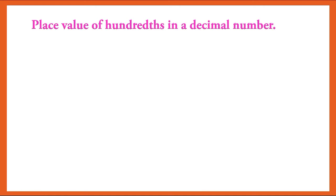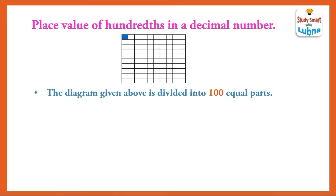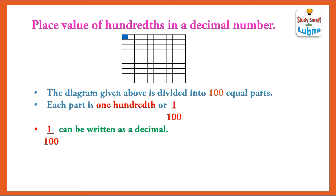Now we are going to learn about place value of hundredths in a decimal number. Here you can see a figure is given — it is divided into one hundred equal parts. The diagram given above is divided into one hundred equal parts. Each part is one hundredth, or one upon one hundred. One upon one hundred can be written as the decimal 0.01.